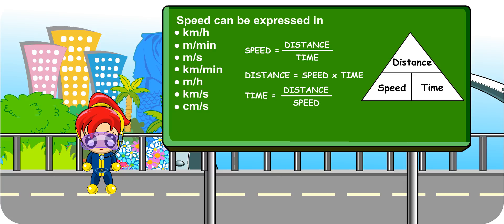How about average speed, Turbo Girl? Average speed is the average distance travelled per unit time. Average speed equals total distance divided by total time. Very good, Turbo Girl. We shall end here today. Goodbye.